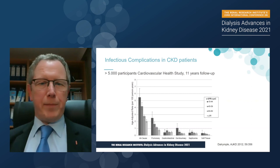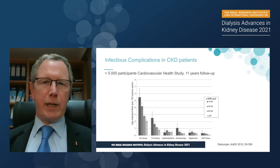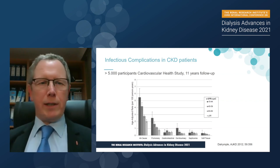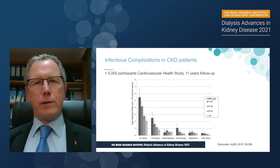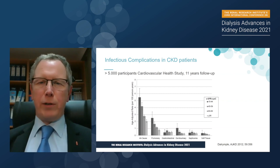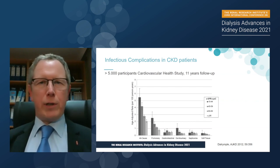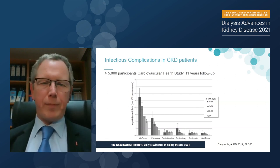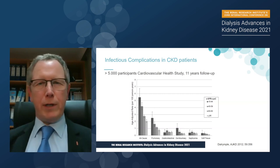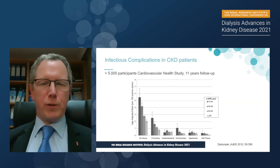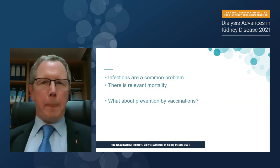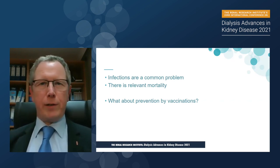What about CKD patients? A study on more than 5,000 participants of the cardiovascular health study with a long follow-up showed that infections are major causes for complications in these patients. You see on the left the all-cause infection problems according to eGFR, with darker bars for the lower eGFR. This is not distributed equally across all types of infections, since genitourinary and pulmonary infections were the drivers of complications in these patients.